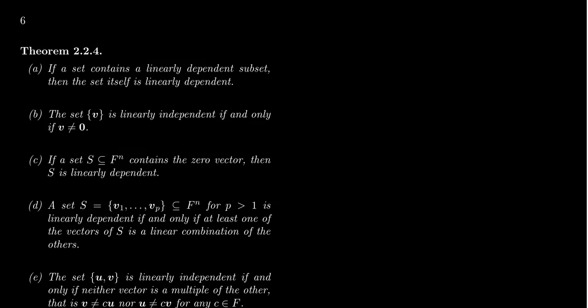If a set of vectors contains a linearly dependent subset, then that means the set itself is linearly dependent. If a set has any subset that's dependent, it's like a tumor—it's a cancer that's going to spread throughout the entire set.